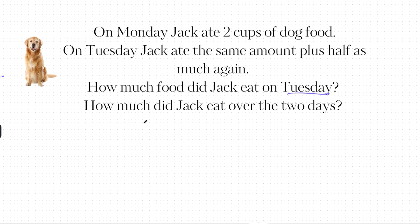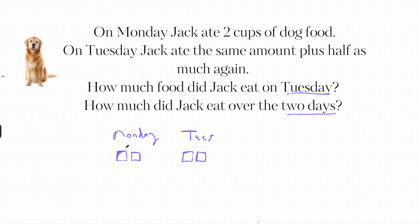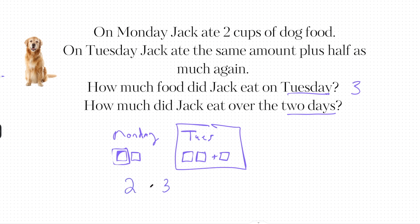Let's draw this scenario. On Monday, Jack ate two cups of dog food, so I'm going to draw a couple of squares — these represent cups. Now on Tuesday he ate the same amount plus half as much again. Half of Monday's amount would be one more cup. So on Tuesday he ate a total of three cups. How much did Jack eat over the two days? Monday he had two and Tuesday he had three, and two plus three gives us five.